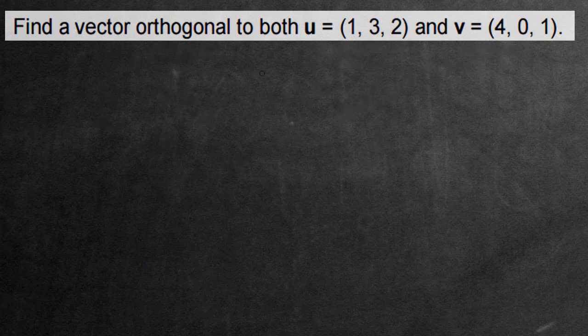So the first step to solve this problem is to write out the two vectors on top of each other sort of. So u equals and we're gonna have 1, or sorry, a 1, a 3, and the 2. That's the u vector. The v will be the 4, 0, and 1.